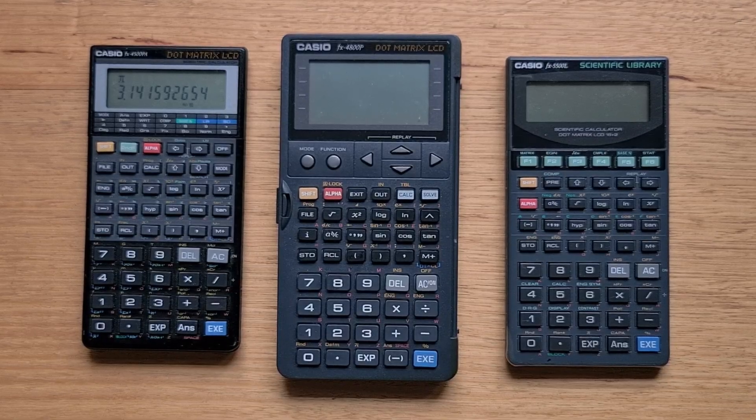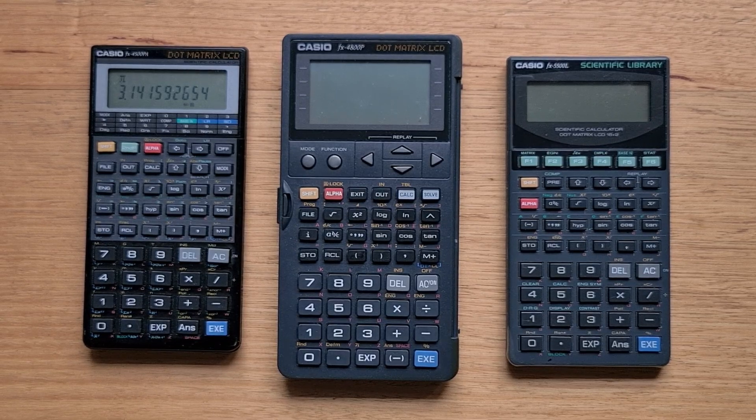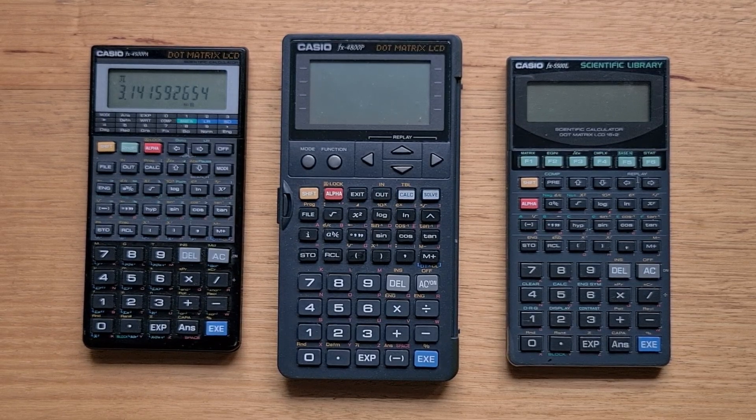One nice feature Casio did add in the 4500P is that you can call files as subroutines from a main routine, which can make it easier to break up large programs. In summary, the 4500P was an improvement over its predecessors in some ways but inferior in others.